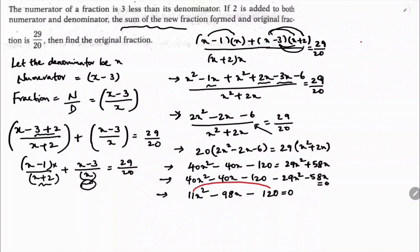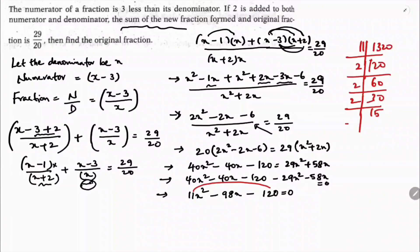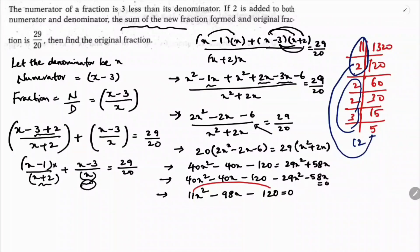Now I need to factorize this. 11 times 120 is 1320. Factoring 1320: 2 times 660, 2 times 330, 2 times 165, 3 times 55, and 3 times 5. We need factors that give 98 when combined. So I split minus 98x as minus 110x plus 12x, because 110 times 12 equals 1320. So: 11x squared minus 110x plus 12x minus 120.